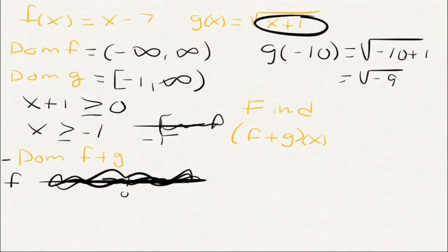I can put anything in f, but in g I can only put the values that are bigger than -1. So I can only put these guys. If we're looking for the AND, the AND is the overlap, and we see that they overlap from -1 to infinity. And you never include infinity.